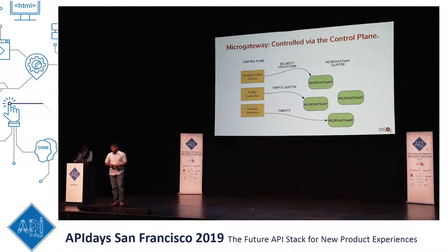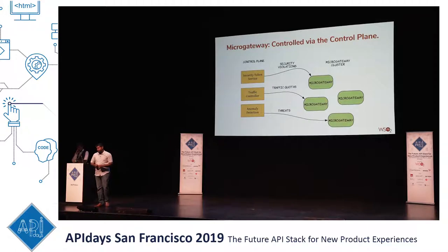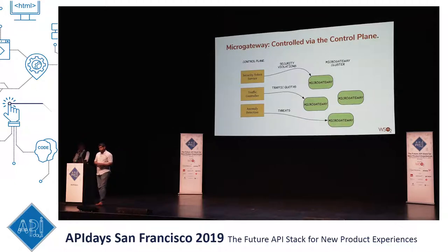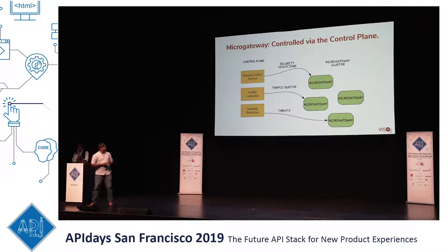That sounds more like it's basically managing service levels and that's about it. I would think that with that kind of distribution of micro-gateways, you'd be looking at the traffic controller to do a lot more switching and smart direction. No — the traffic controller here is more like rate limiting.